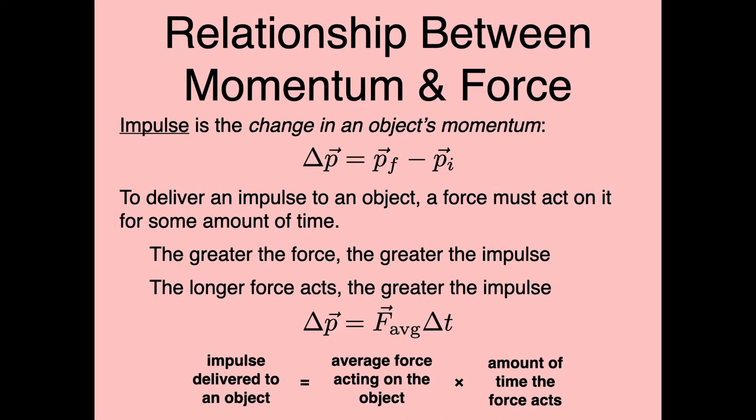The result is: delta p equals F average times delta t. The impulse delivered to an object equals the average force acting on it times the amount of time that force acts.